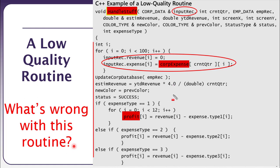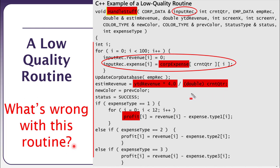Inside the body of the code there is no exception handling or error prevention. For example, there is a division where the divisor can be zero at times, so we need to handle an arithmetic exception or check that the value is not zero. Additionally, magic numbers are used — constants like 100, 4.0, and 12 — that do not indicate their purpose.